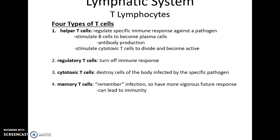Pre-T cells go to the thymus to mature into functioning T cells. There are four types: helper T cells, which regulate the specific immune response by stimulating B cells to become plasma cells and stimulating cytotoxic T cells to divide and become active; regulatory T cells, which turn off the specific immune response; cytotoxic T cells, which when activated destroy body cells affected by the pathogen; and memory T cells, which remember the infection so that if the pathogen returns there will be a vigorous response — this is how we get immunity to diseases.